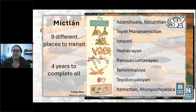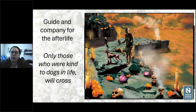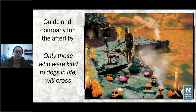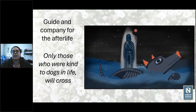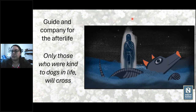Remember the Quintlan — the first level of the Mictlan — because there you have to get the help of a dog to cross the first river before going to the next level. The dog is your guide and company in the afterlife through all nine levels. They said that only those who were kind to dogs in life will be able to cross the river. So in Nahuatl cultures of central Mexico, the dog was held in very high consideration because it was the helper for the afterlife.